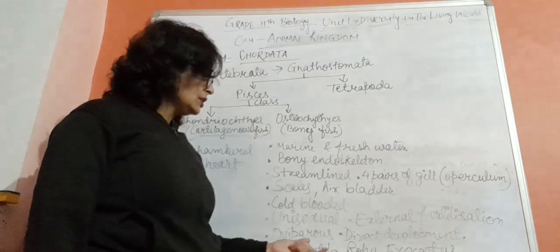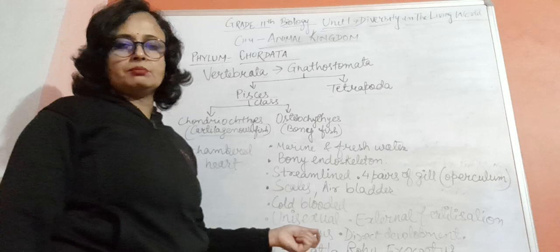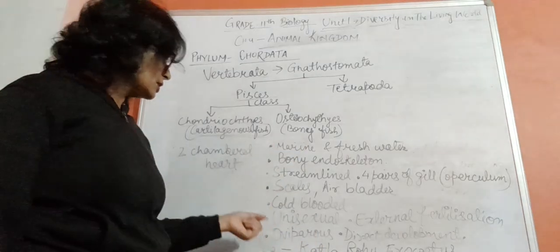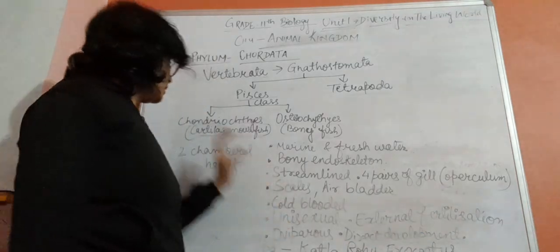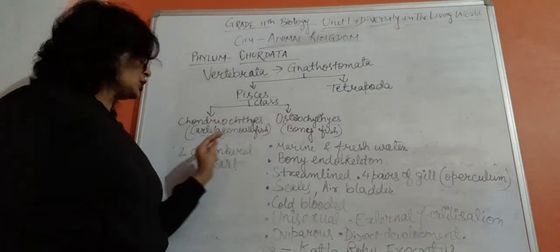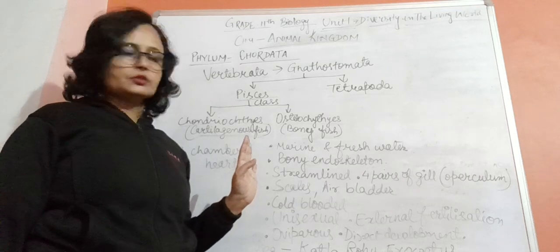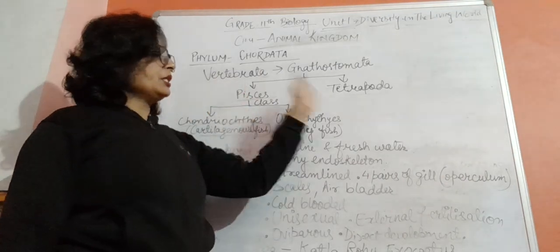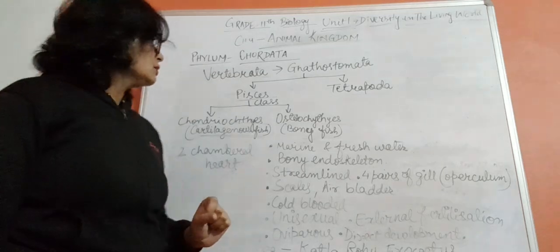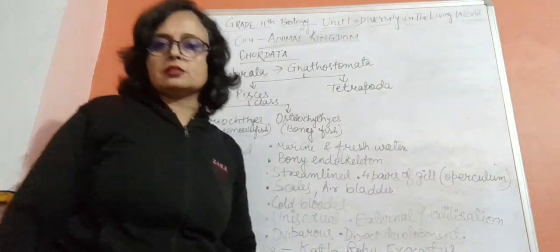Two-chambered heart is found in both Chondrichthyes and Osteichthyes. We have now completed Pisces. Next, we will move to Tetrapoda and its four different classes.